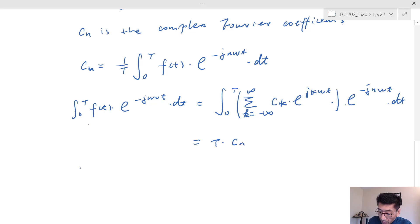That's all we have, and therefore C_n is equal to this form. The proof of this is almost trivial.